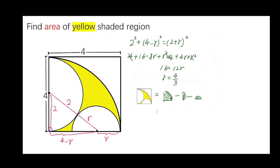That equals to 1 over 4 times pi times 4 squared minus 1 over 2 times pi times 2 squared minus 1 over 2 times pi times 4 over 3 squared.